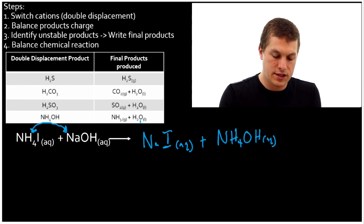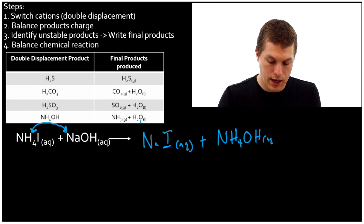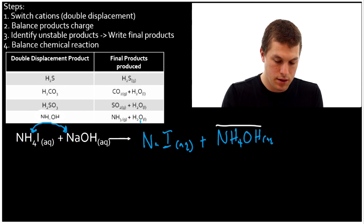Now, let's see. Did we find any unstable products? Well, sodium iodide's not on our list. But NH4OH, that is on our list, right here. And what it breaks down into is NH3 and H2O. So we're gonna write our reaction again.